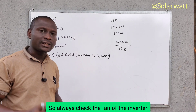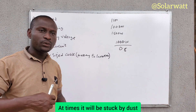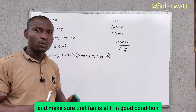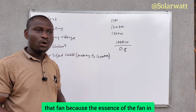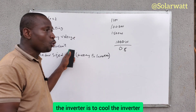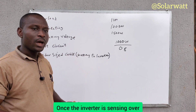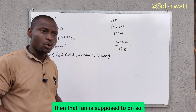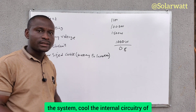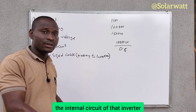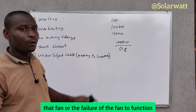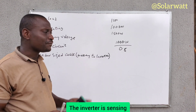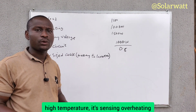Always check the fan of the inverter to see whether it is still working. At times it will be stuck by dust — you need to dust the fan and make sure it is in good condition. If it is not working, you'll need to replace it, because the purpose of the fan is to cool the inverter. Once the inverter senses high temperature overheating, the fan is supposed to come on to cool the internal circuitry. The absence or failure of the fan will make the inverter start shutting down when it senses high temperature.